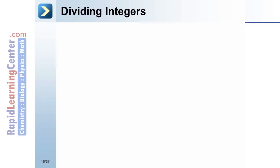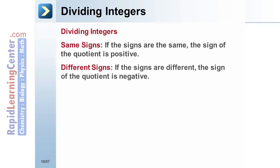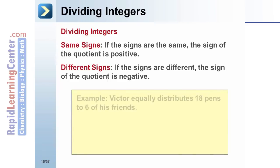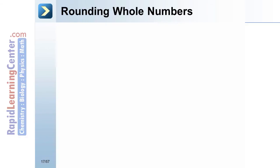Dividing integers: if the signs are the same, the sign of the quotient is positive. If the signs are different, the sign of the quotient is negative. Example: Victor equally distributes 18 pins to 6 of his friends. Pins per friend equals 18 divided by 6, which equals 3. Each of Victor's friends received 3 pins — the sign of the quotient is positive.